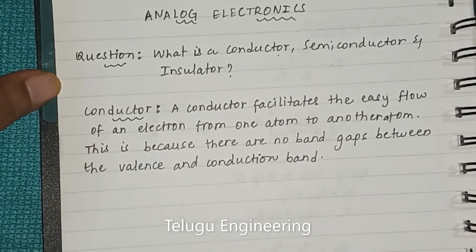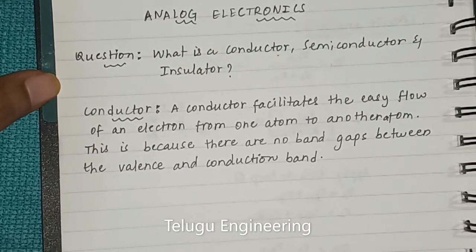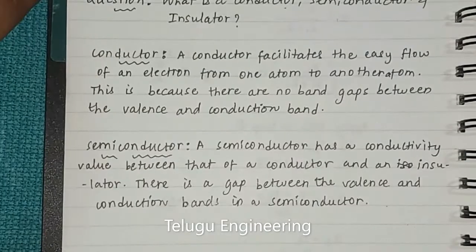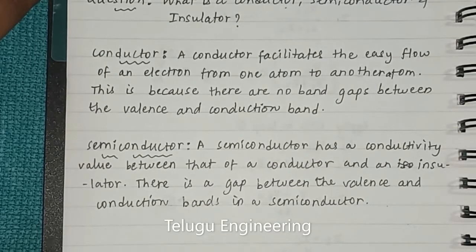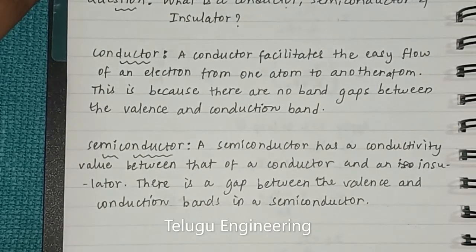Coming to the definition of a semiconductor: A semiconductor has a conductivity value between that of a conductor and an insulator. There is a gap between the valence and conduction bands in a semiconductor.